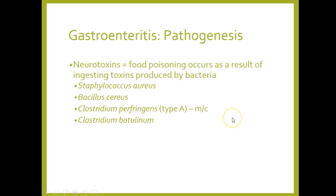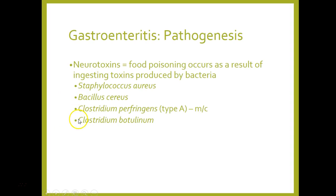Neurotoxins are what often result in food poisoning cases. You can get food poisoning just from ingesting a toxin left behind without the bacteria even being present. Staph aureus is known to do this, as is Bacillus cereus, and two anaerobes we'll discuss later: Clostridium botulinum and Clostridium perfringens, which is the most common.